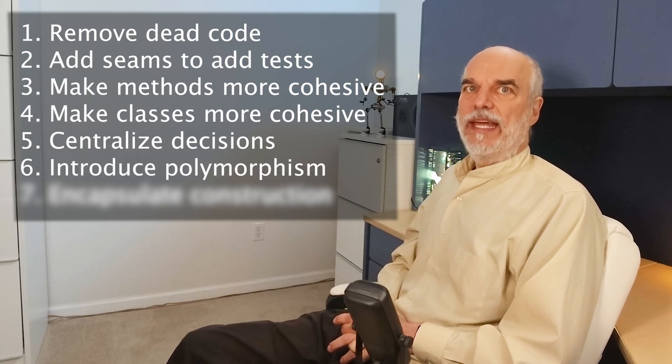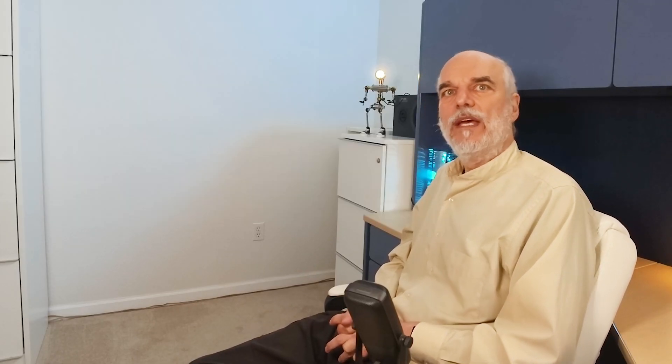Number six: introduce polymorphism. We want to introduce polymorphism when we have varying behavior that we want to hide — for example, the way we sort a document or compress a file. If I have more than one way of doing a task and I don't want my callers to be concerned with which variation I'm using, then I may want to introduce polymorphism so that I can allow new variations to be added later without breaking existing clients.